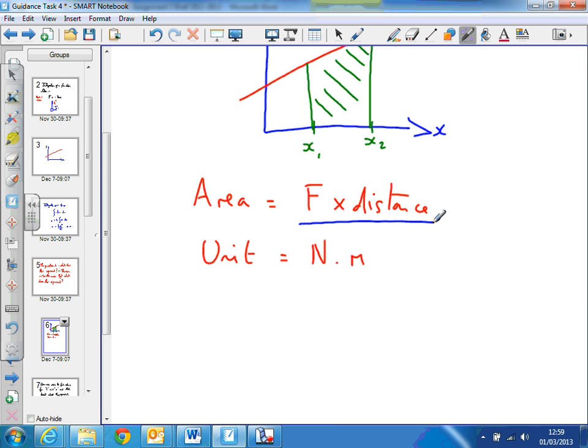Force times distance represents something that we know—we give a name to this, and that's the work done. So actually, the area underneath this curve represents the work, because work equals force times distance. So in a problem where we're plotting force against distance, the area underneath the curve always represents the work done, which could then be the energy used up and so on. So you can do all sorts of calculations finding the area underneath this curve.